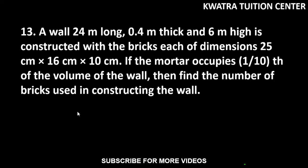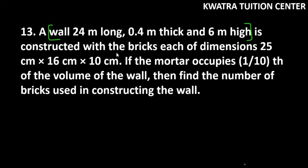Let's start with question number 13. A wall 24 meter long, 0.4 meter thick and 6 meter high — these are the dimensions of a wall. It is constructed with bricks, and the dimensions of each brick are given. The bricks are cuboidal.